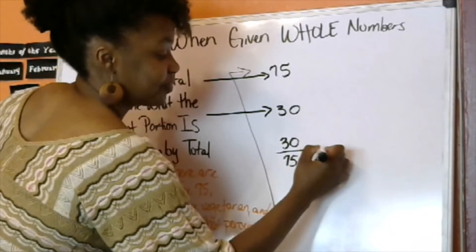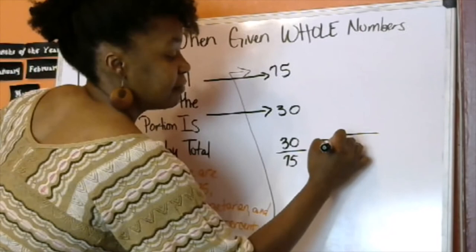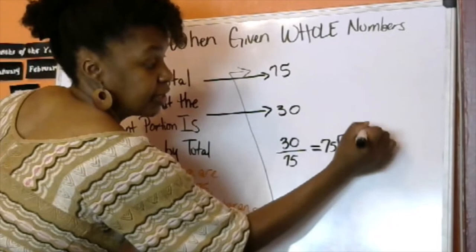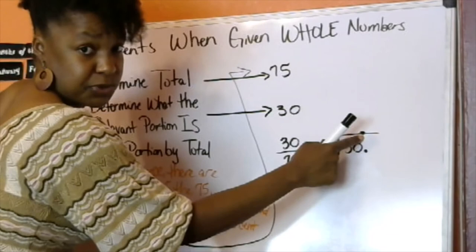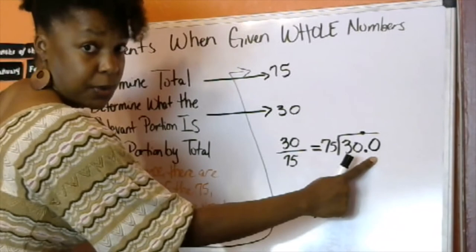So, we have 30 divided by 75. And of course, we can't squeeze 75 into 30. So, we're going to add a decimal after 30, and then add a decimal up top on our bracket directly above. And we're going to add a zero after 30.